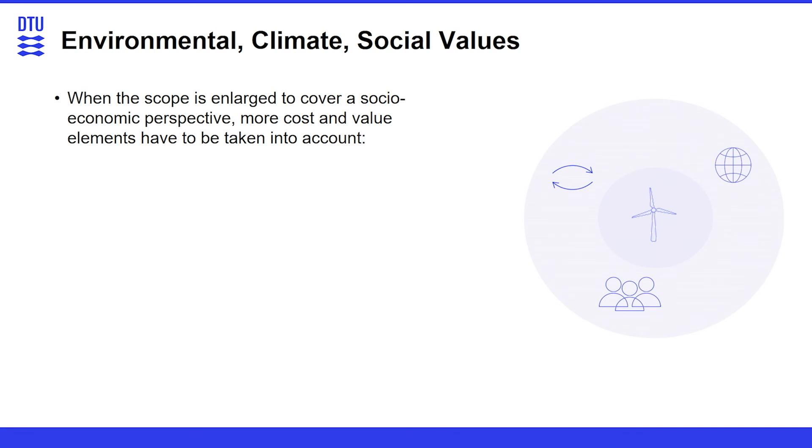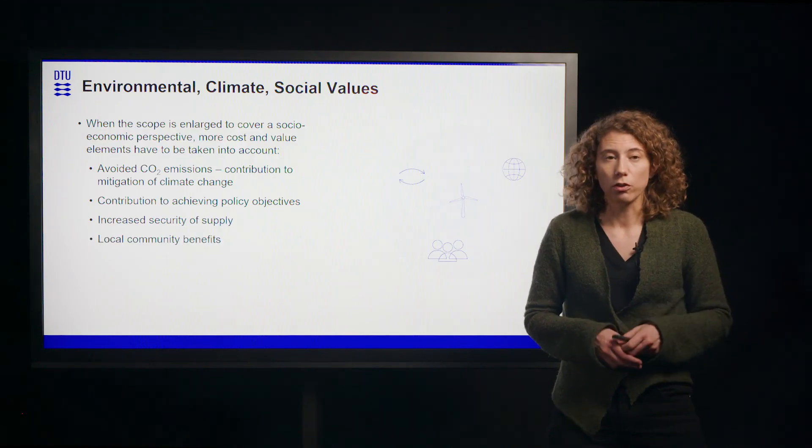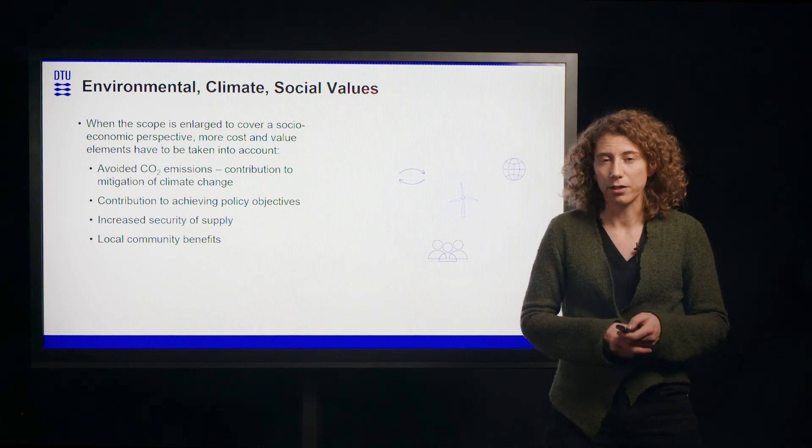And if we want to include these other elements of value into this perspective then we need to try and estimate what these effects are. However, I'm just giving you a couple of examples here. Avoided emissions are a value that are often counted for wind energy projects. How much is this wind energy project contributing to mitigation of climate change? That is related to the policy objectives that it might be related to this area, but there are other policy objectives that the project could help with. For example, increased security of supply, the project could also be used to increase local community benefits.